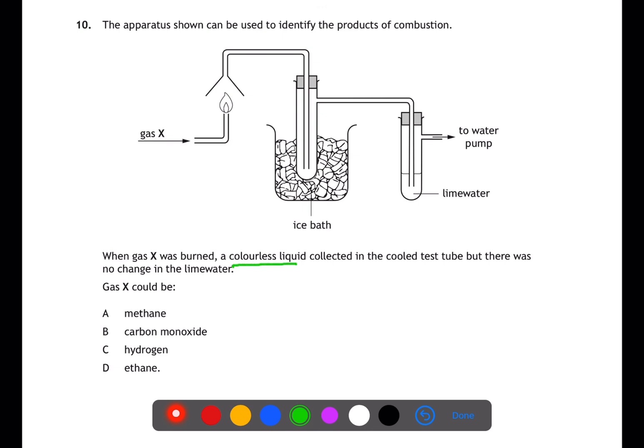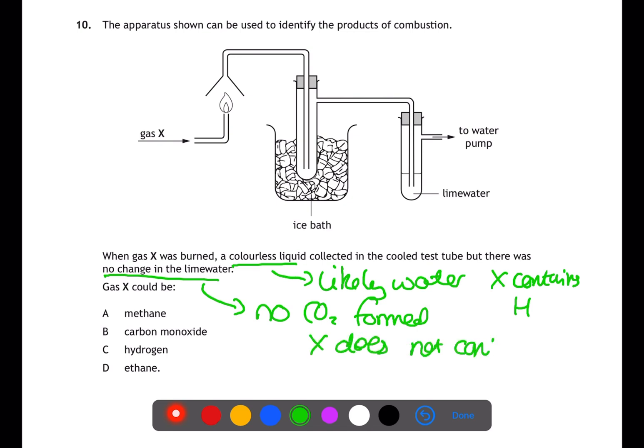In question 10, we're collecting a colorless liquid when gas X is burned. This colorless liquid is likely to be water, which implies X contains hydrogen. In the lime water there is no change, which means carbon dioxide is not being produced, so X does not contain carbon. Looking at the answers, all compounds containing carbon can be eliminated, leaving behind only hydrogen, C.